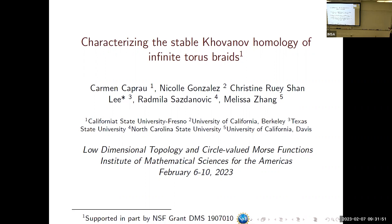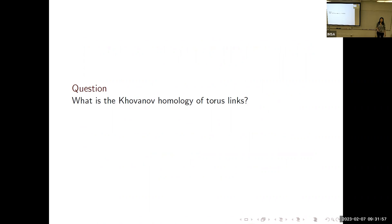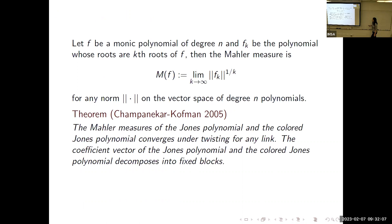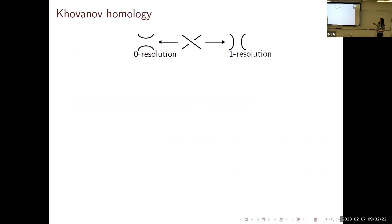This talk is about a very simple question: what is the homology of torus links? It started with a result by Abhijit and Ilya on the Mahler measure of the Jones polynomial and the colored Jones polynomial under twisting. I'll start with that, but first give a quick introduction to Khovanov homology, covering only what will be necessary for the rest of the talk.